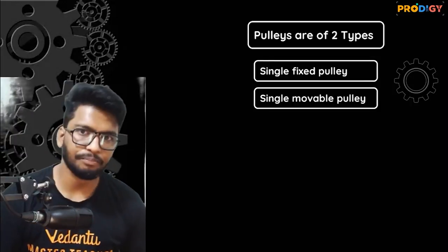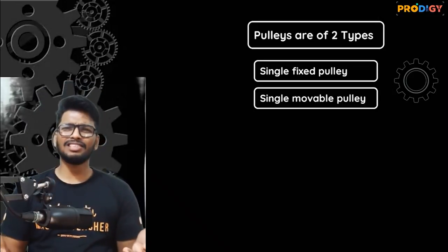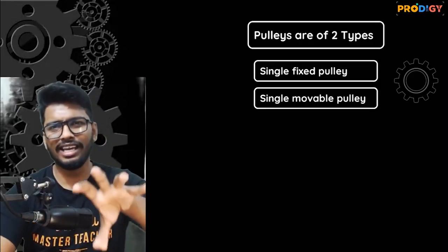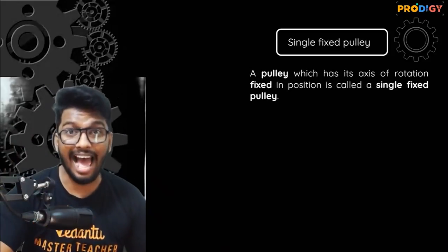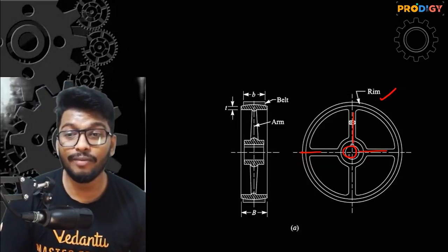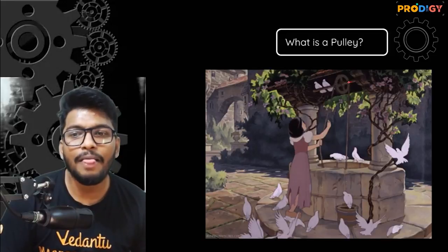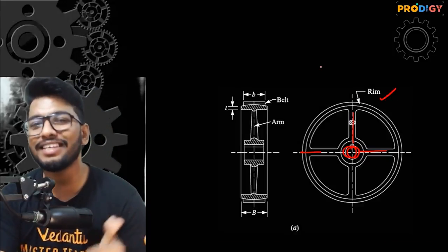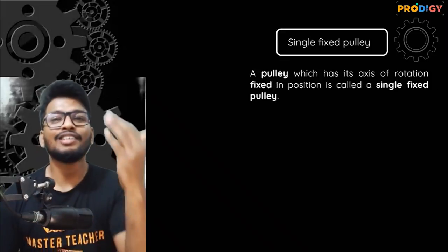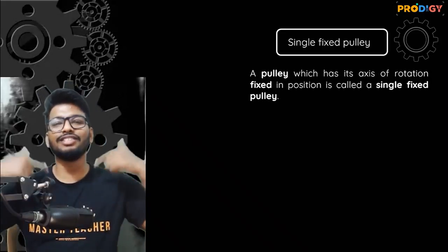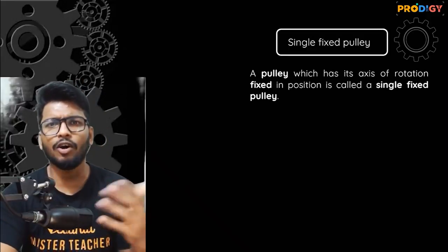There are two types of pulleys: one is called the single fixed pulley, the other is called the single movable pulley. As the name suggests, the single fixed pulley is one where the axis of rotation is fixed to a certain point — something we have been seeing for the entirety of our lives. That is what is called a single fixed pulley.